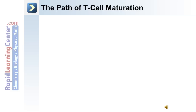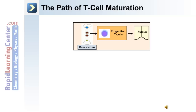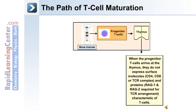After being formed in the bone marrow, progenitor T cells migrate to the thymus. When they arrive at the thymus, they do not express surface molecules such as CD4 or CD8, or the T cell receptor complex. Proteins such as RAG1 and RAG2, required for TCR rearrangement, which are characteristic of T cells, are also absent at this stage.